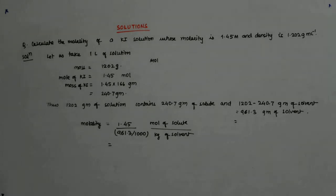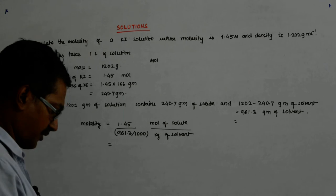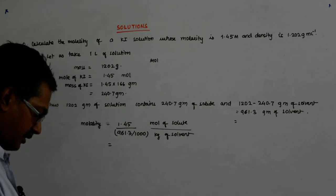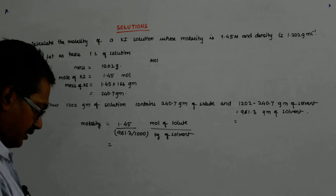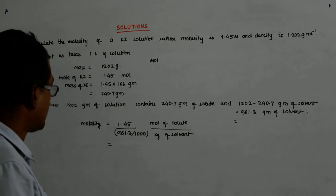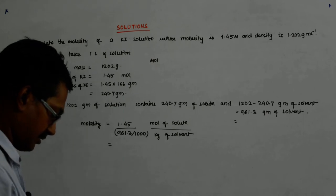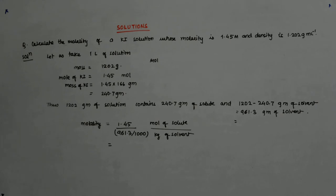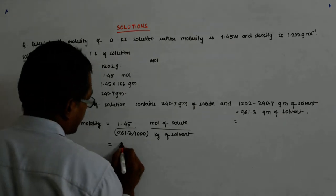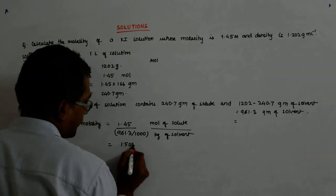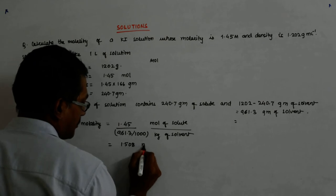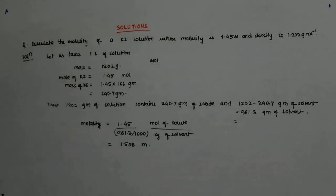What is that equal to? So, it is 1.45 into 1000 divided by 961.3. That gives you 1.5083. So, that is equal to 1.508 molal.